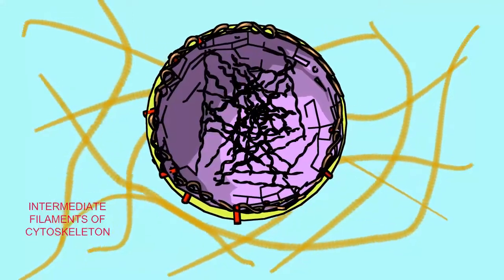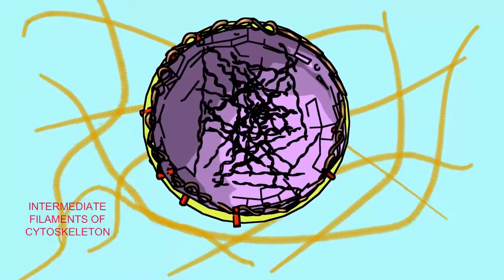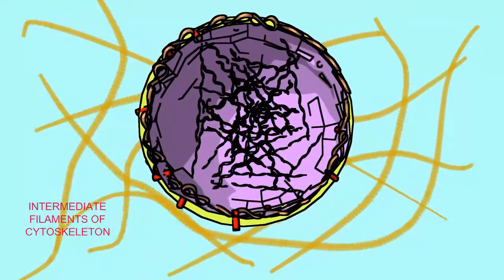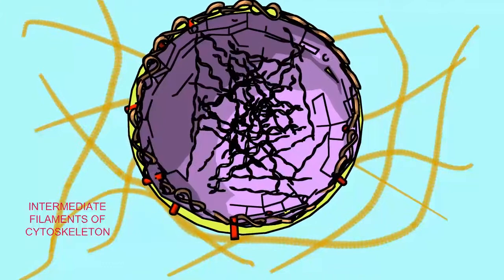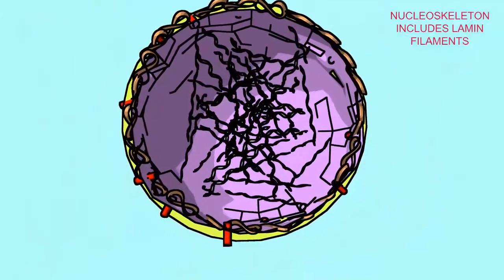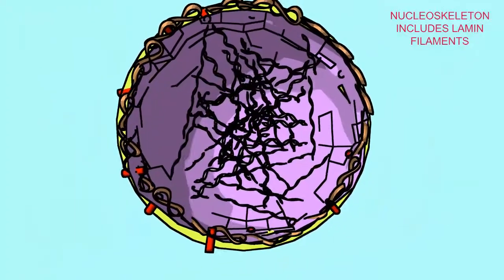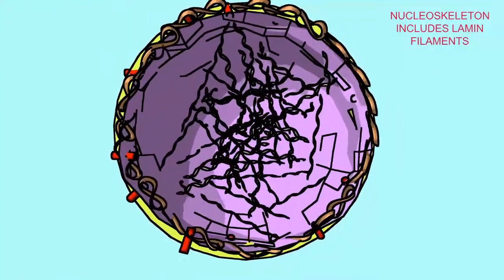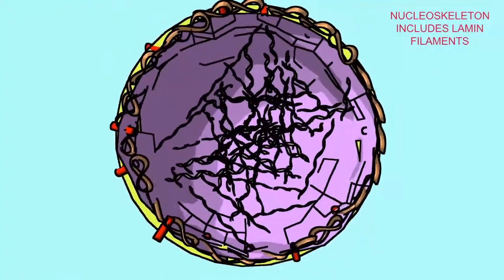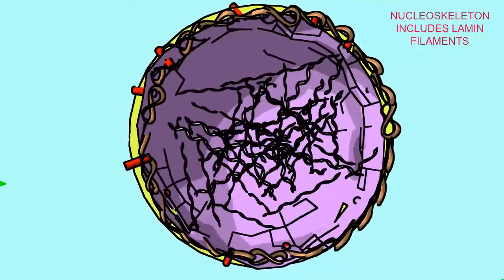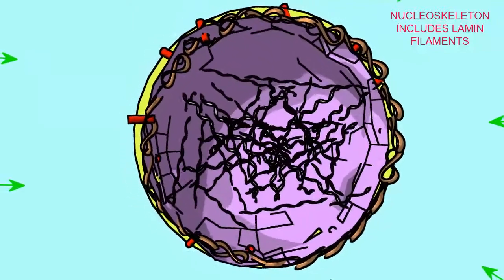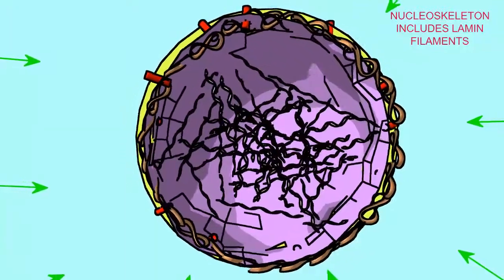Intermediate filaments are components of a cell's cytoskeleton, and specialized members of the intermediate filament family, known as lamins, form a nuclear skeleton.